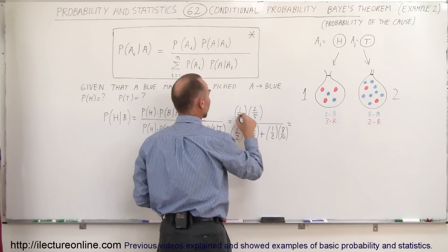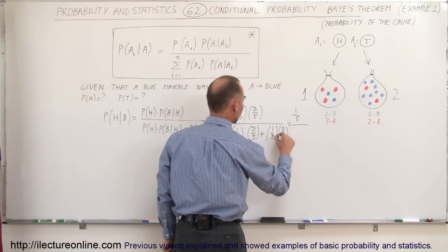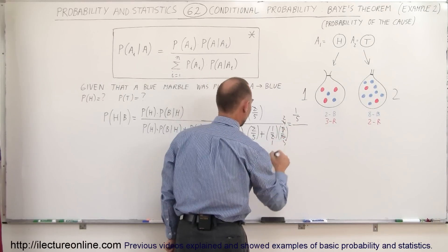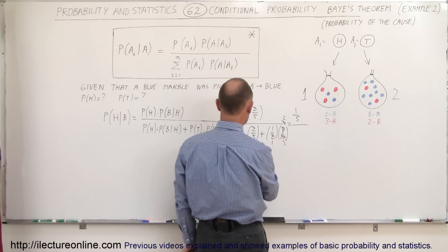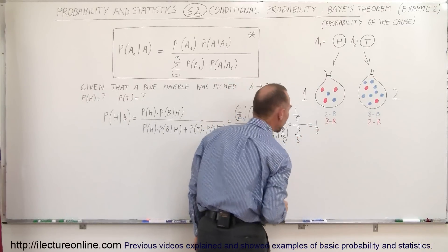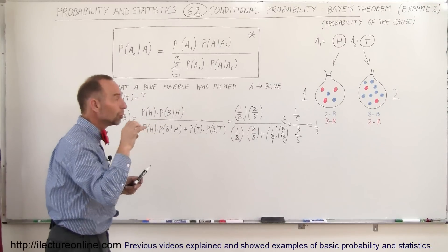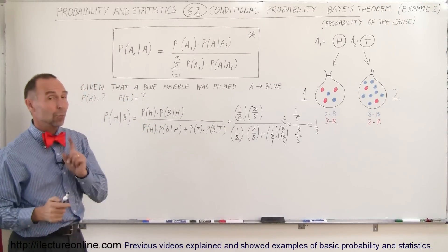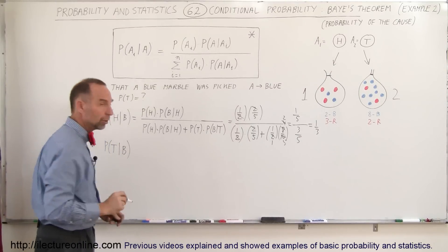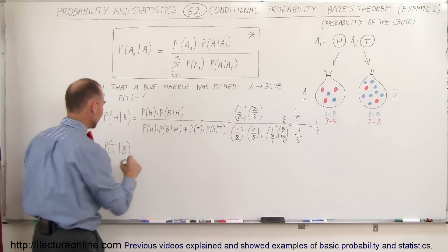Simplifying: the numerator becomes 1 fifth. The denominator is 1 fifth plus — one-half times 8 over 10 simplifies to 2 fifths — so the denominator is 1 fifth plus 2 fifths, which is 3 fifths. Therefore, 1 fifth divided by 3 fifths equals 1 third. So the probability of tossing heads, provided we pulled a blue marble, is 1 out of 3. Logic tells us the probability of tails should be 2 thirds — let's verify with Bayes' Theorem.